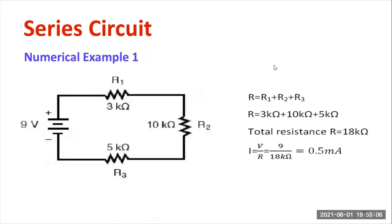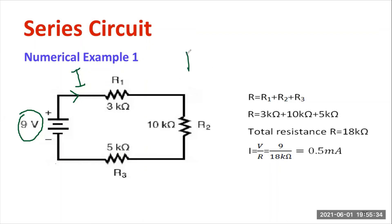Now I would like to show you a simple example. Let us consider the circuit: the total voltage is equal to 9 volts. The resistance values are 3 kilohms, 10 kilohms, and 5 kilohms, all connected in series. First, you need to calculate the total current delivered from the source — to do that, I need to first calculate R equivalent.